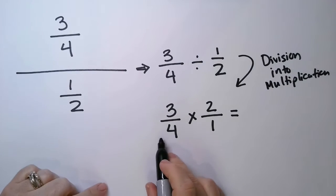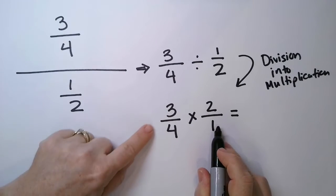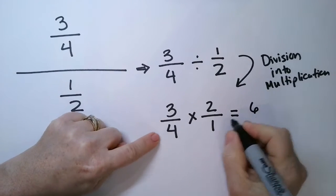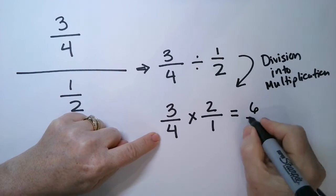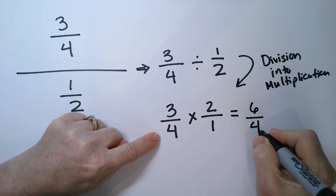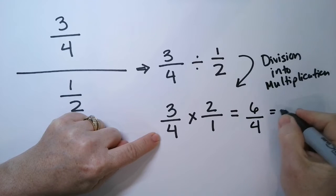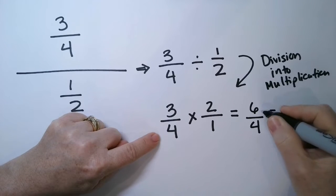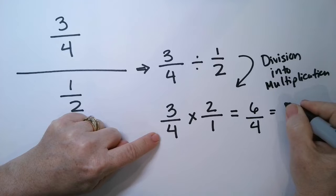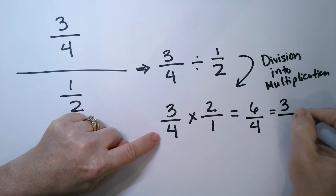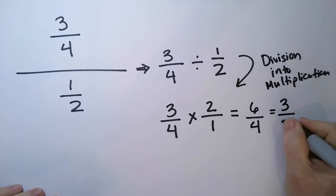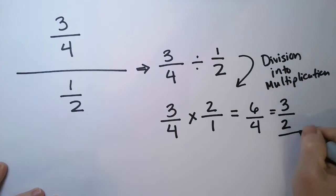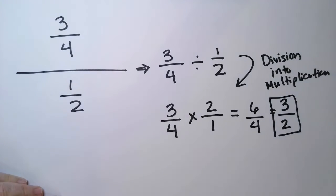Then we simply multiply the top: 3 times 2 is 6, and the bottom: 4 times 1 is 4. We can reduce this by dividing the top and bottom by the same number — in this case, 2. 6 divided by 2 is 3, and 4 divided by 2 is 2. And we have our answer: 3 halves.